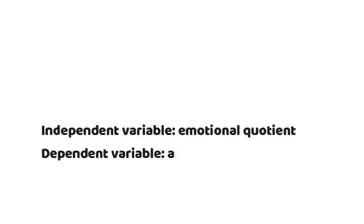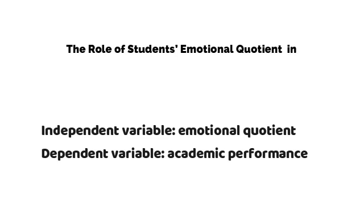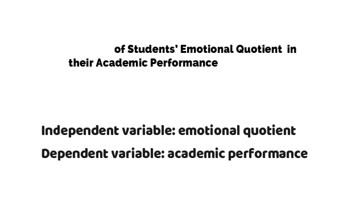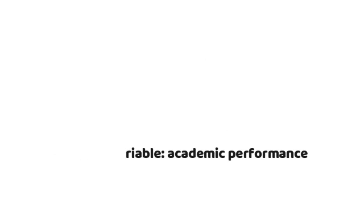Here is an example of a research title. Number 1: The role of students' emotional quotient in their academic performance. The independent variable is the emotional quotient, while the dependent variable is the academic performance.